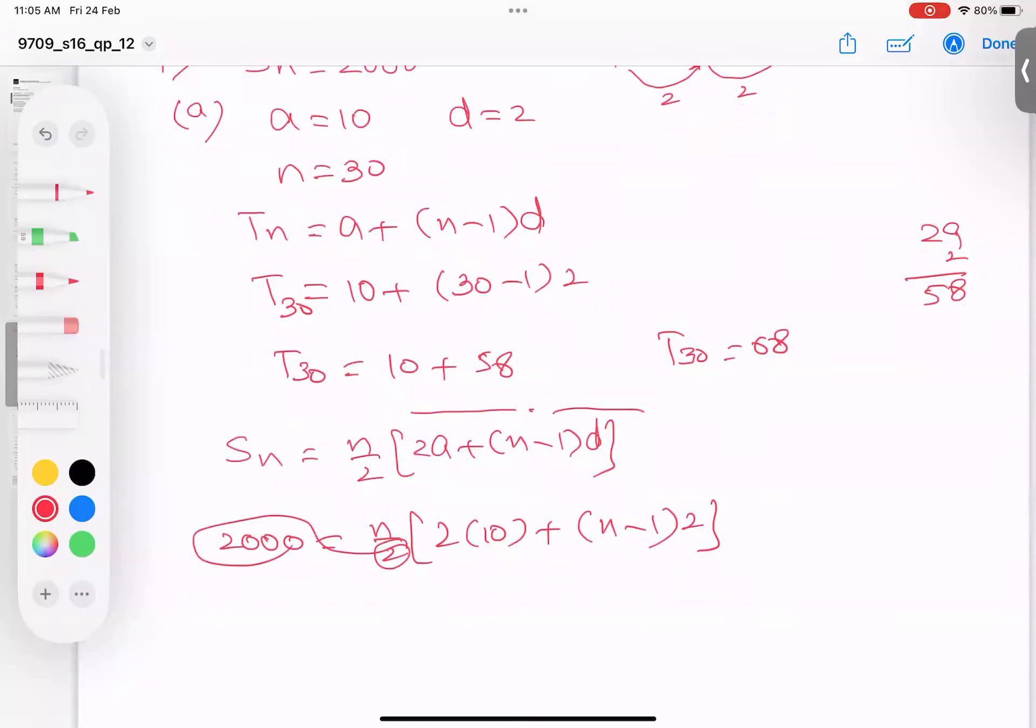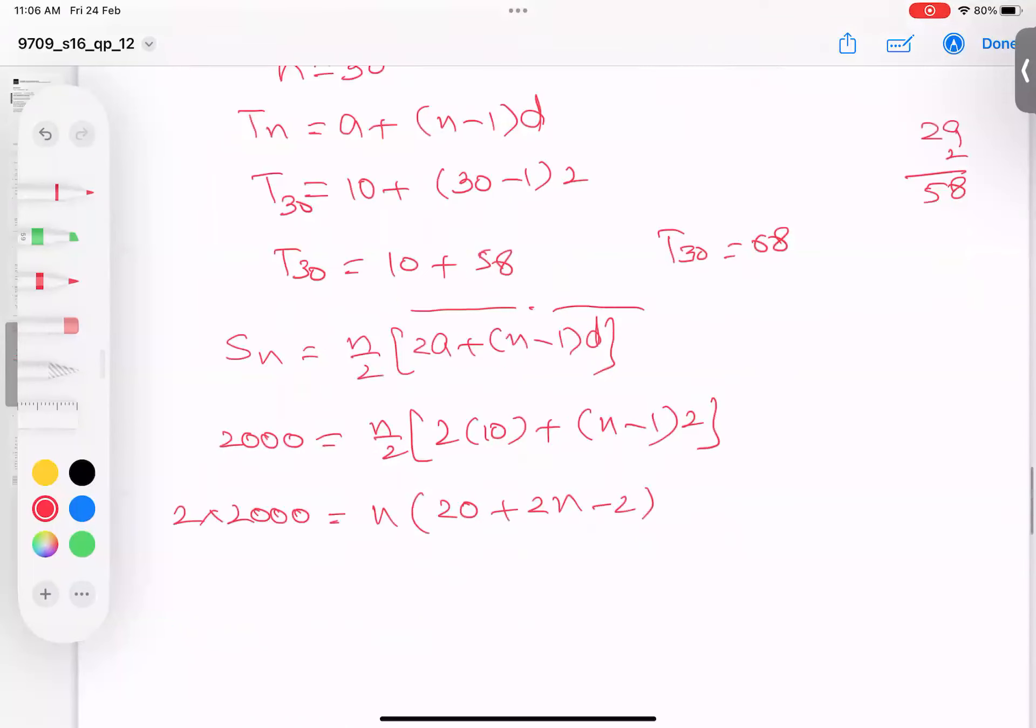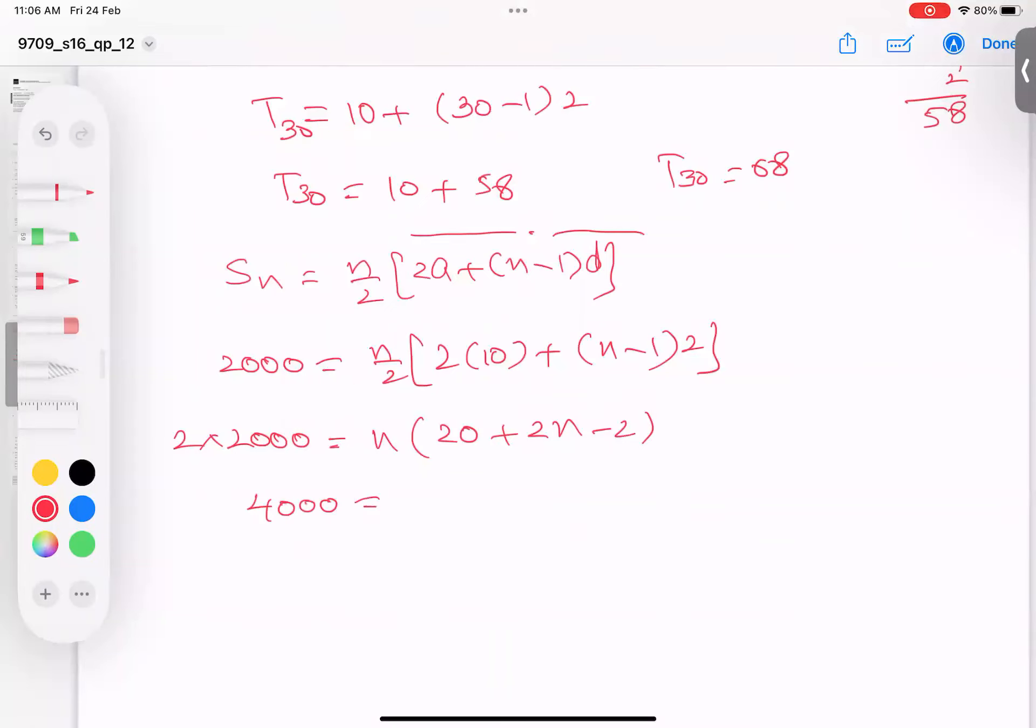I can take the 2 out as a common factor or multiply through. Taking 2 to the left side: (n/2) × 2(10 + n - 1) gives (n/2) × 2(20 + 2n - 2). Wait, let me correct that. Inside the bracket I get 20 - 2 = 18, and 2n. So 4000 = n(18 + 2n). This gives 2n² + 18n - 4000 = 0.